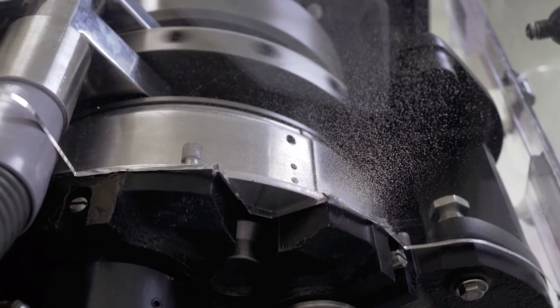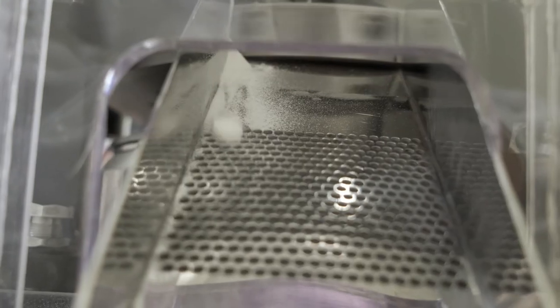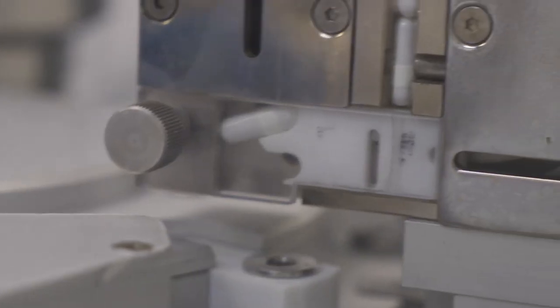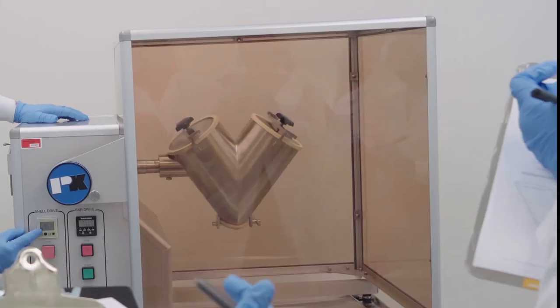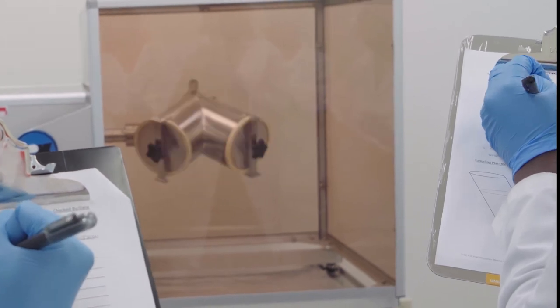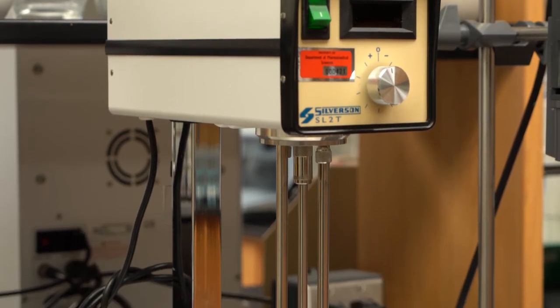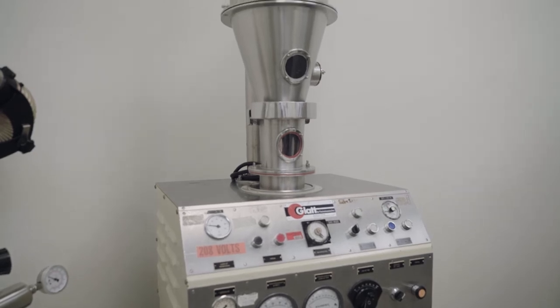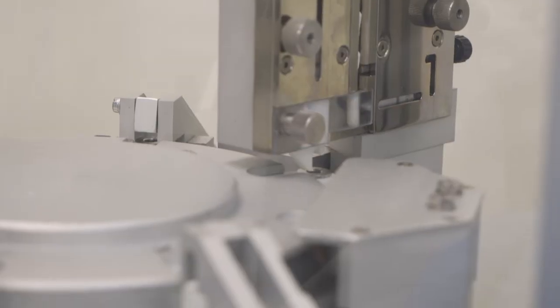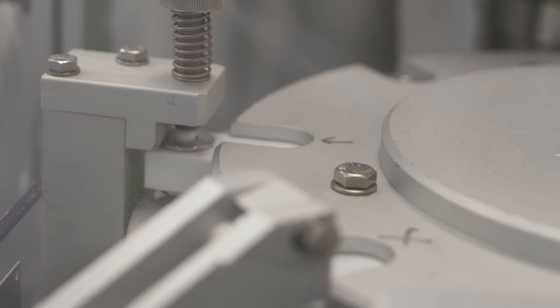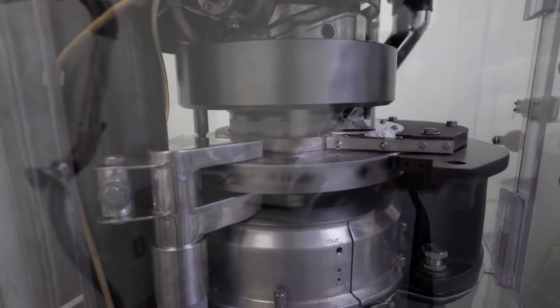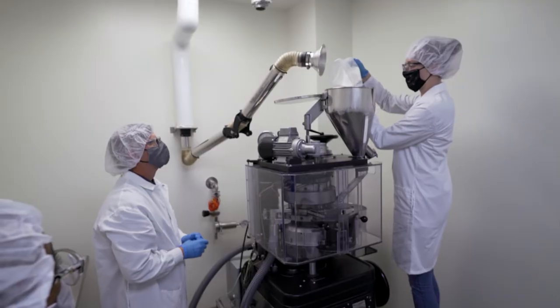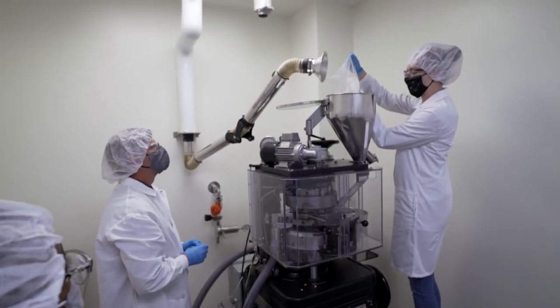For non-sterile dosage forms, we can manufacture tablets, capsules, emulsions, suspensions, and solutions using various equipment. We have blenders for combining powders, mixers and homogenators for liquids and semi-solids, granulators for densifying powders, an encapsulation machine for filling capsules of various sizes, a rotary tablet press with various tooling to compress many different size tablets, a tablet coater, and a spray dryer to modify the physical properties of powders.